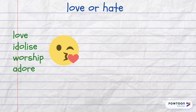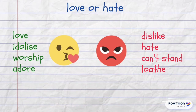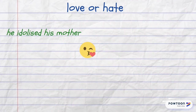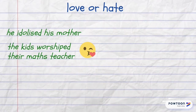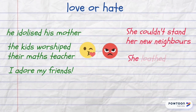Let's talk about love and hate. When you love someone very much, you can say that you idolize, worship, or adore this person. The opposites are dislike, hate, can't stand, and loathe. There's more vocabulary on love and hate, likes and dislikes in my video 'Describe Your Feelings and Emotions in English' — click the link above to watch it. For example: He idolized his mother. The kids worshipped their math teacher. I adore my friends. She couldn't stand her new neighbors. She loathed him after the divorce.